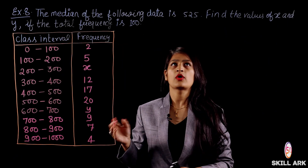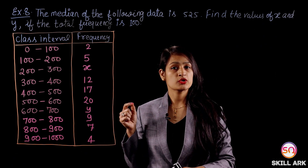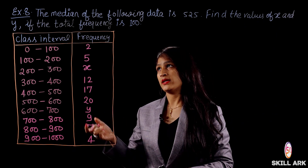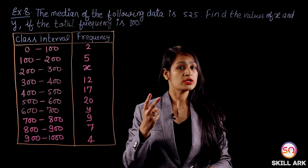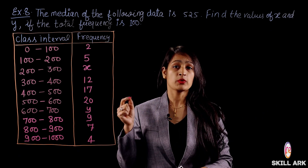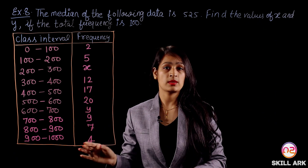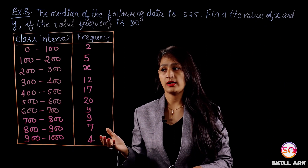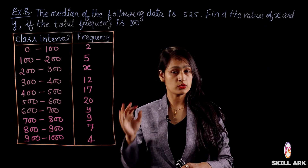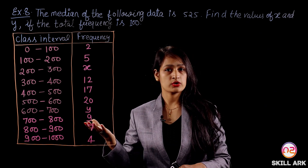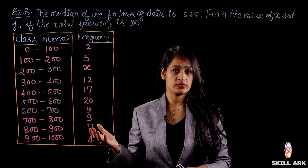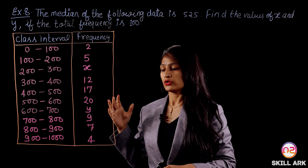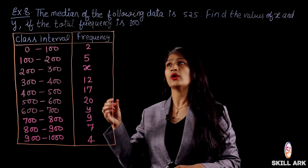Example number 8: the median of the following data is 525. Find the value of x and y if the total frequency is 100. So we have two things given — median is 525 and total frequency sum is 100 — and from these we have to find the values of x and y, which are missing frequencies.